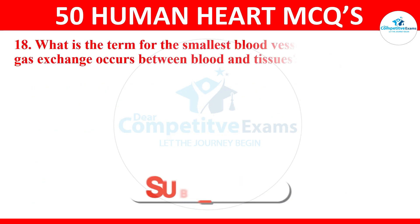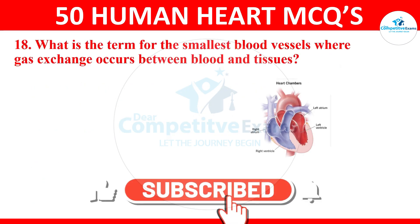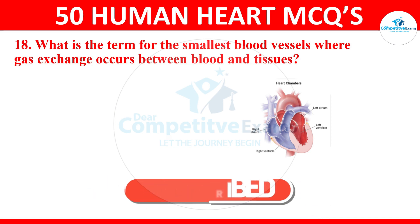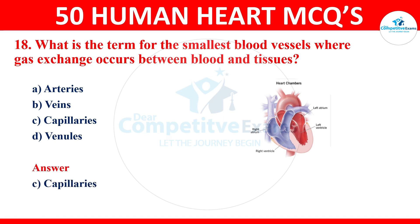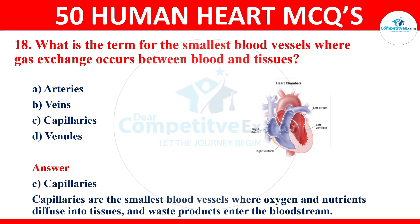Question 18: what is the term for the smallest blood vessels where gas exchange occurs between blood and tissues? The options are arteries, veins, capillaries, or venules. The correct answer is capillaries. Capillaries are the smallest blood vessels where oxygen and nutrients diffuse into tissues and waste products enter the bloodstream.